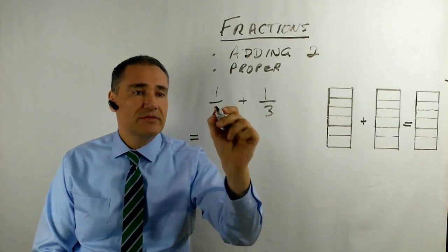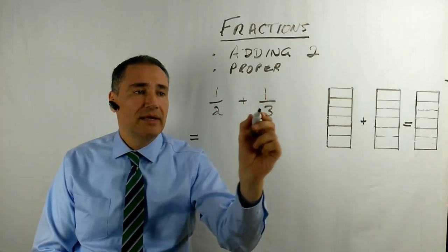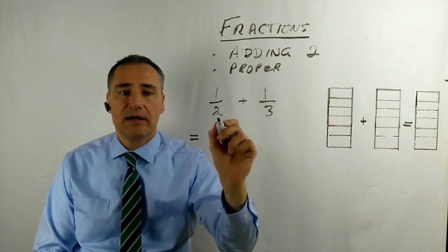So this 2 down here, we're going to multiply on the top and the bottom. And this 3 down here, we're going to multiply on the top and the bottom.